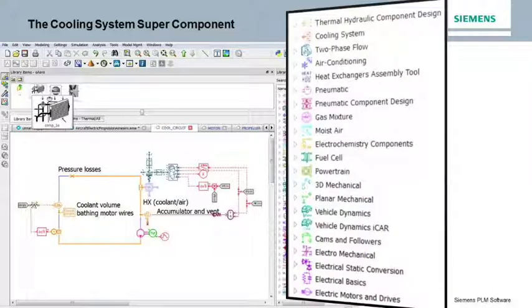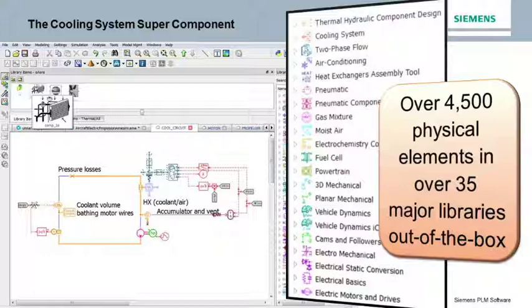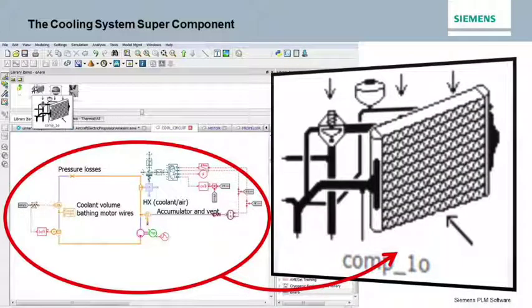Super components are built up from basic physical elements that are available out of the box within the AIMSIM libraries. The elements are connected and tuned to the performance details for a desired system. In this example of the cooling system super component, you can see it contains all the basic elements such as the compressor, expansion unit, tubing, valves, gases, accumulator, and vents.